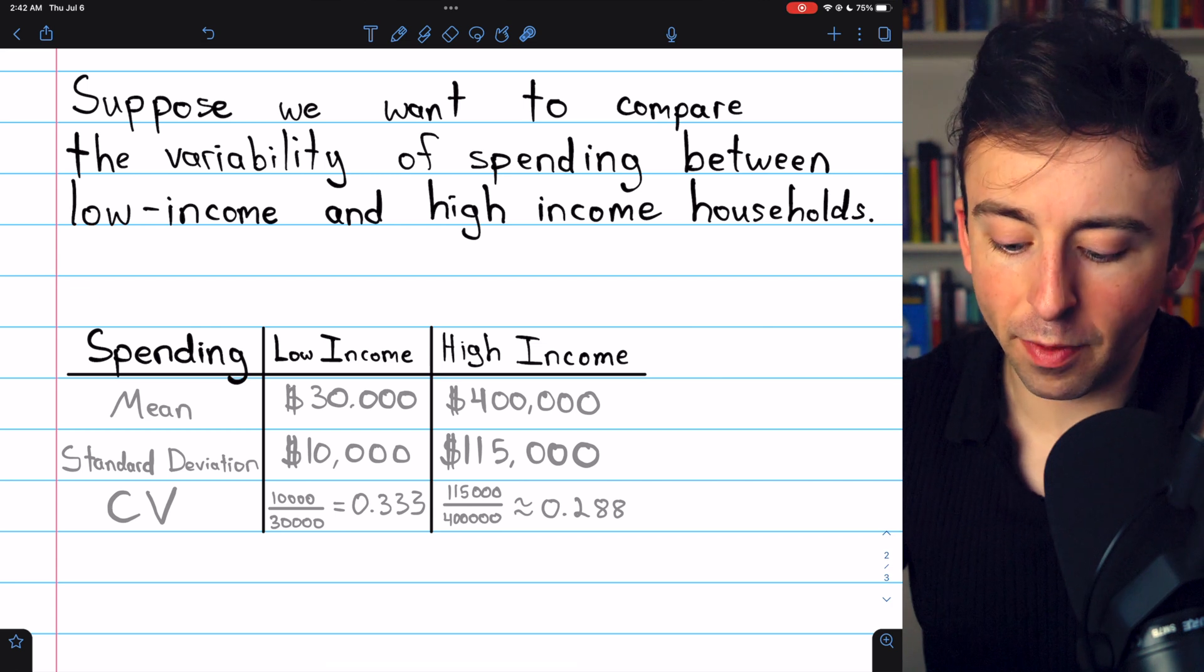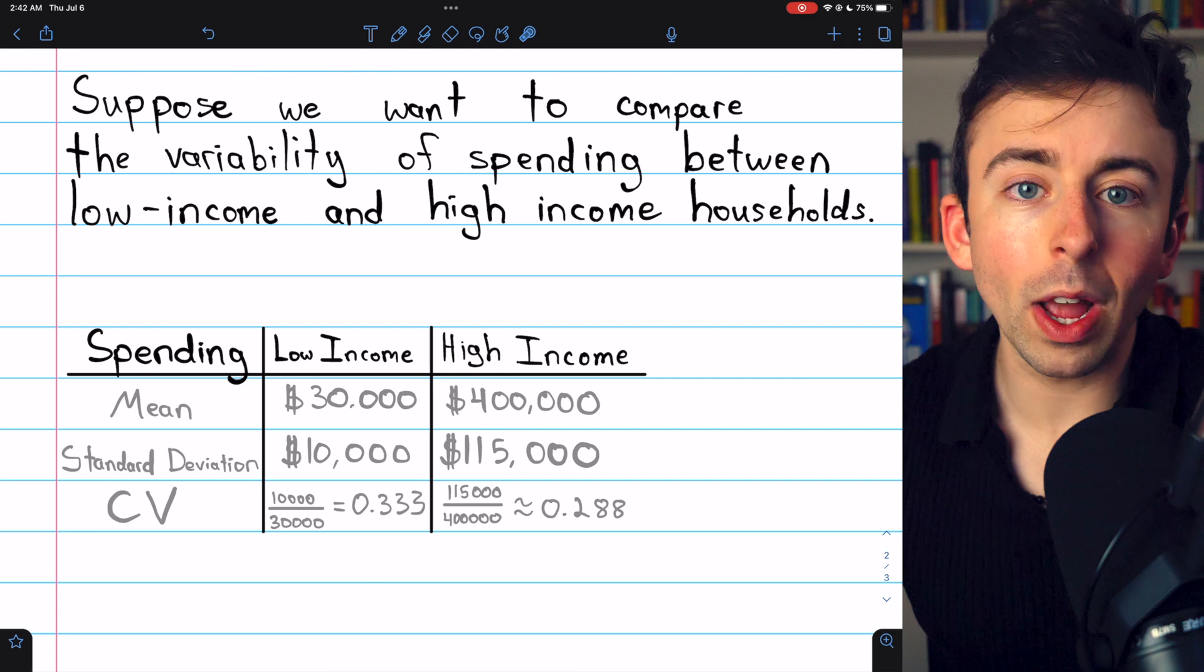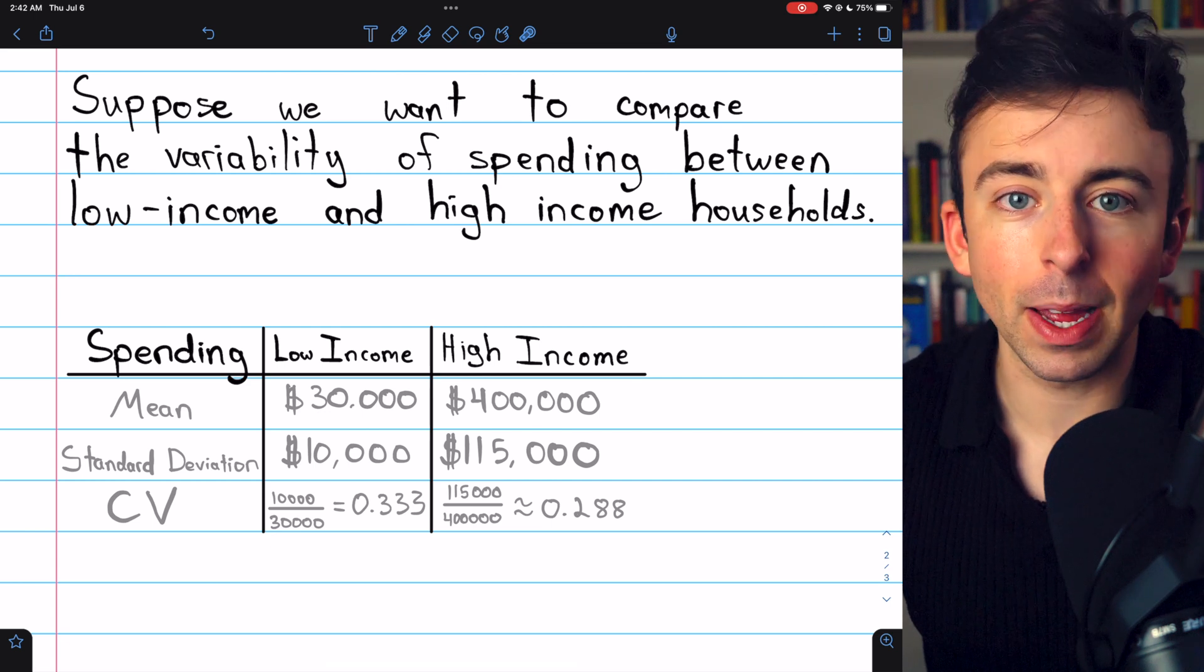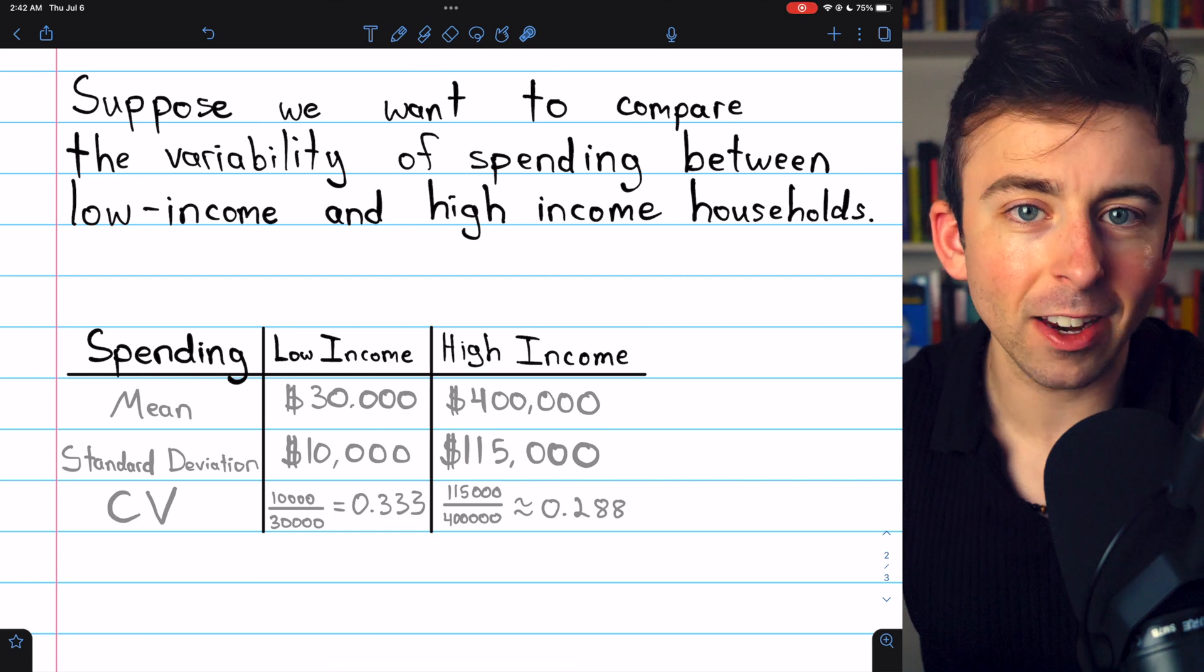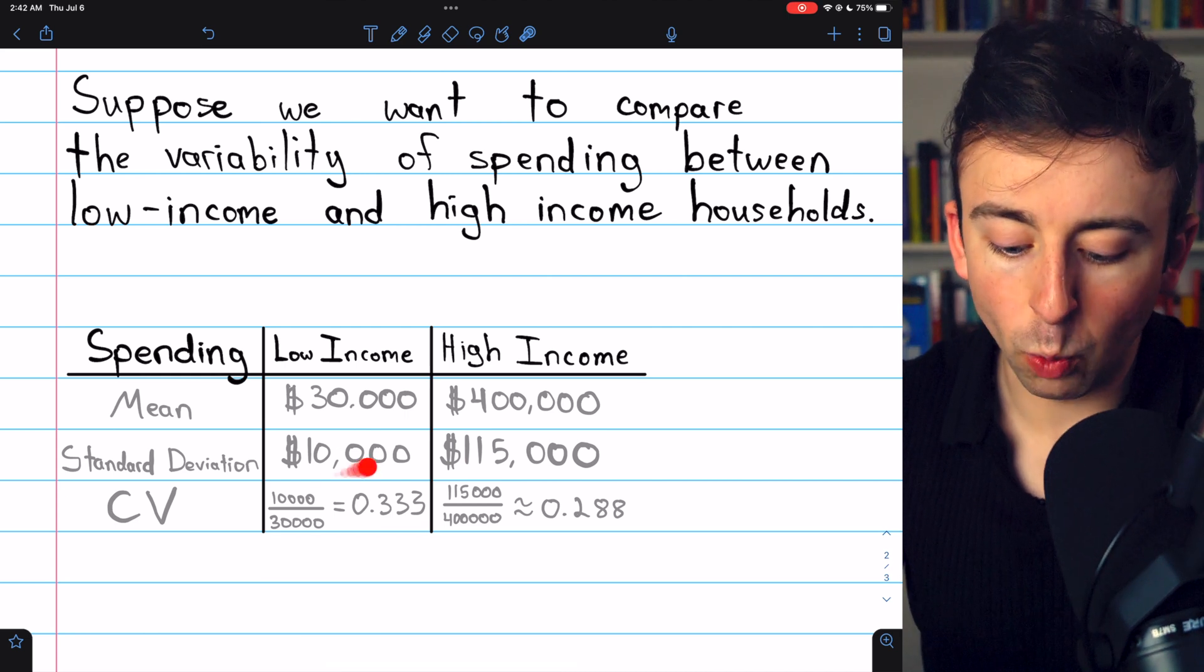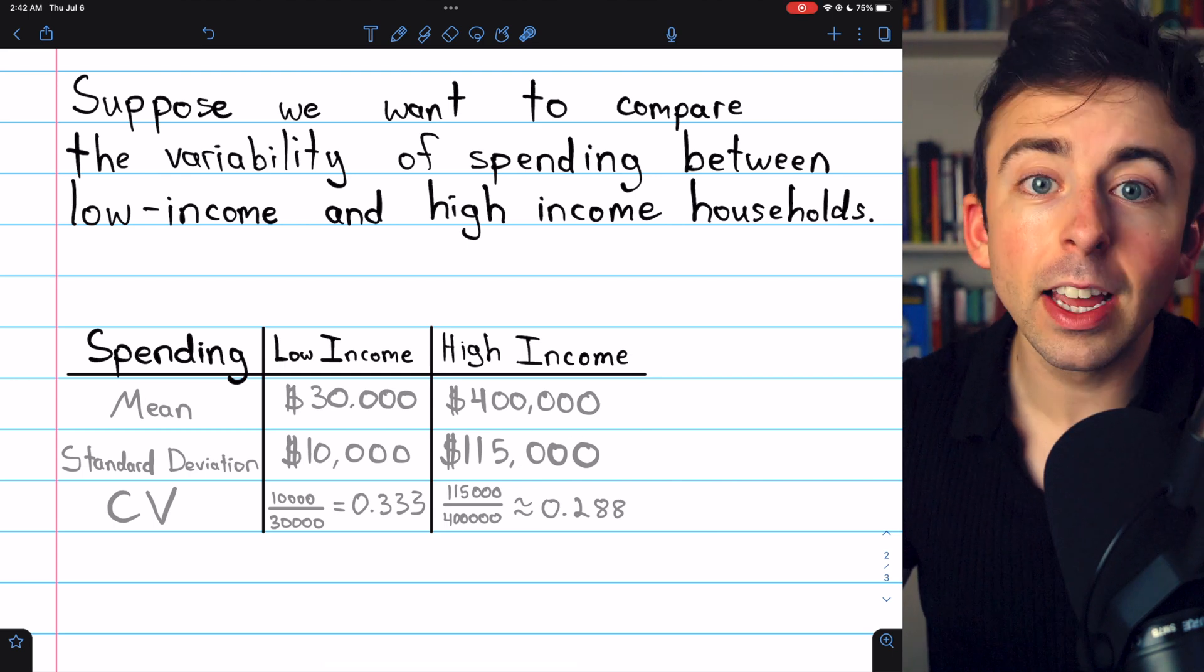It doesn't really make sense, though, to say that the variability in the spending of high-income households is way bigger than the variability of spending in low-income households, just by comparing their standard deviations, because the variation in one context is different from the variation in the other context.